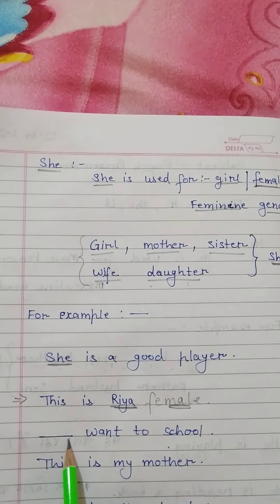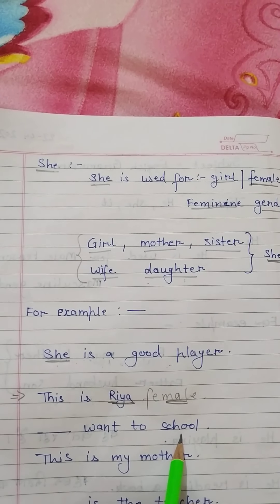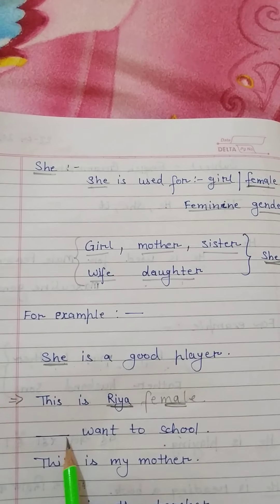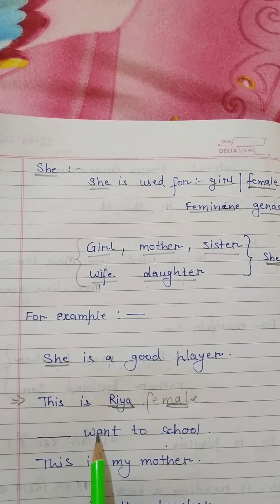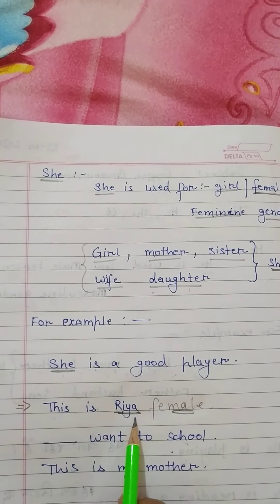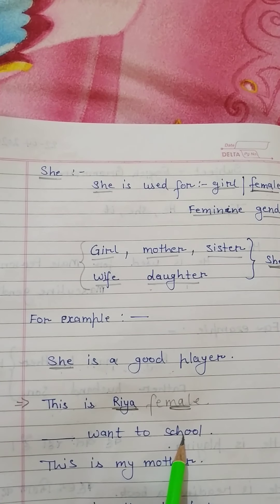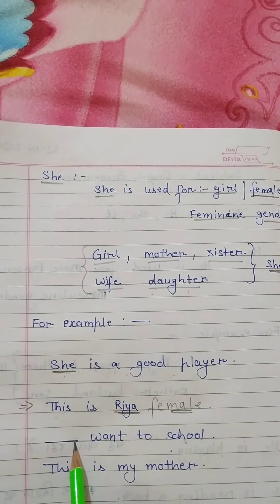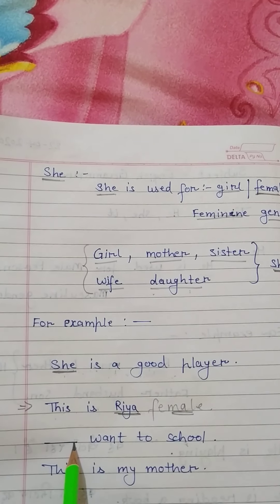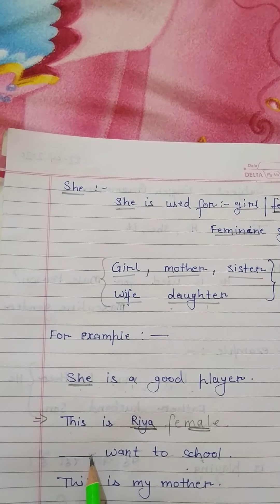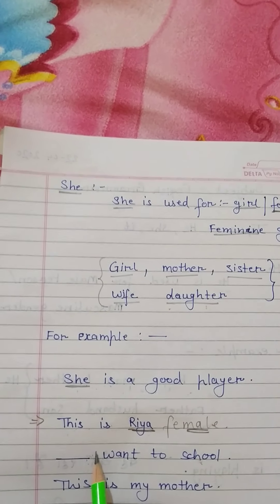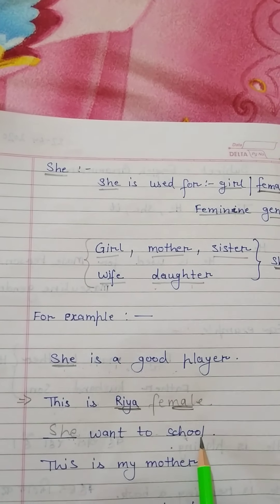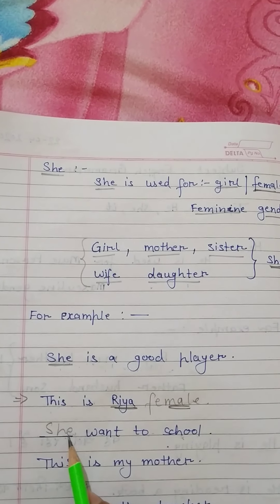Now see the sentence: blank went to school. Who went to school? This sentence is about Ria. Ria went to school. We do not use Ria again — instead we use she for Ria. We always use she.